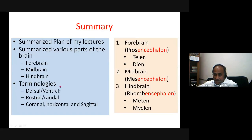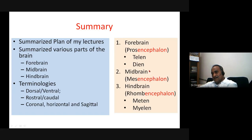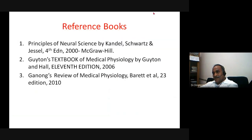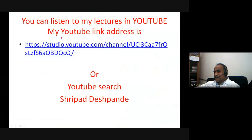In summary, the forebrain, midbrain, and hindbrain have been covered along with terminology such as dorsal/ventral, rostral/caudal, and coronal/horizontal/sagittal sections. The forebrain prosencephalon includes the telencephalon — cerebrum and basal ganglia — and the diencephalon. The midbrain includes the colliculi, tegmentum, and tectum. The hindbrain metencephalon includes the cerebellum and pons, and the myelencephalon is the medulla. Reference: Kandel's Textbook of Neuroscience. Visit the YouTube channel by searching 'Sripad Deshpande.'